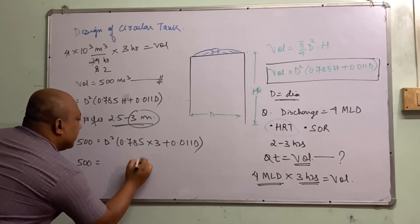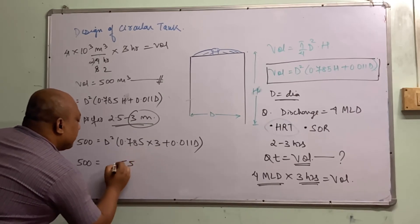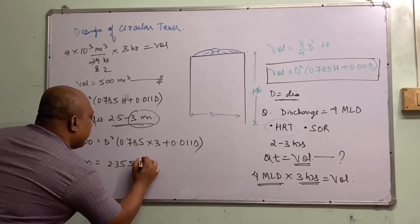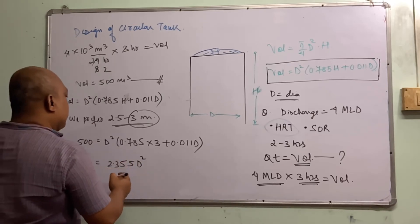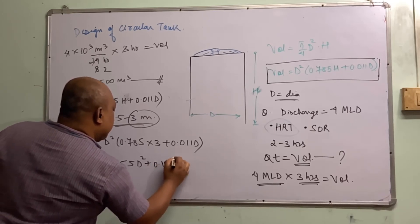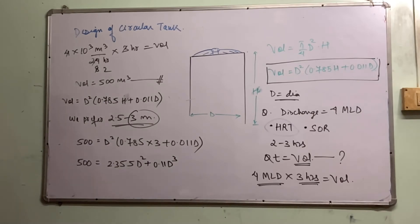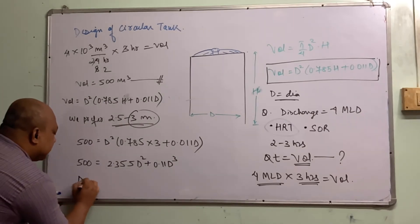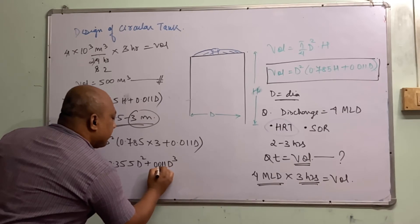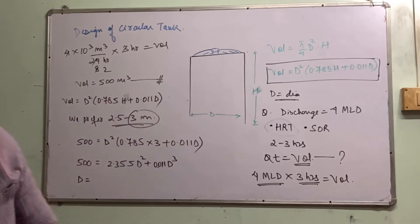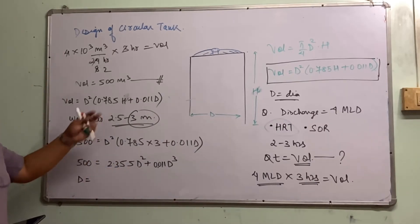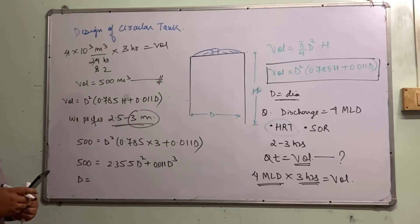Expanding: 500 = 2.355D² + 0.011D³. This is a cubic equation in D and we need to solve it by trial and error. We know the diameter cannot exceed 30 meters — if it does, we prefer two tanks. Since 500 m³ is not a very high volume, one tank should suffice.